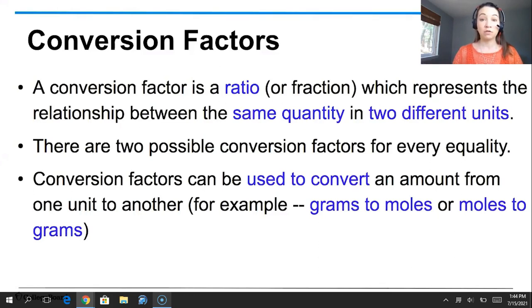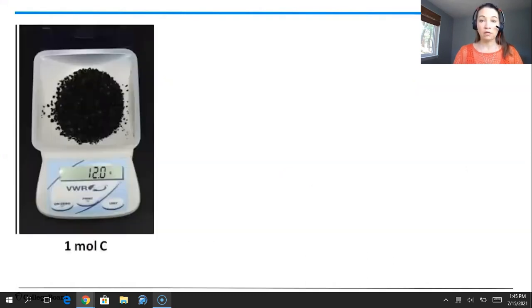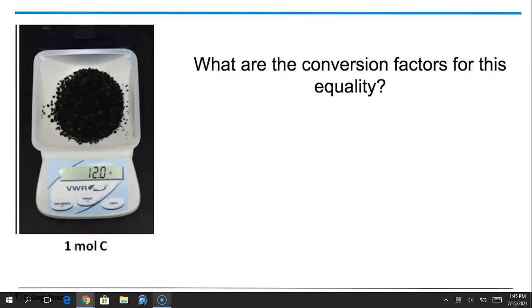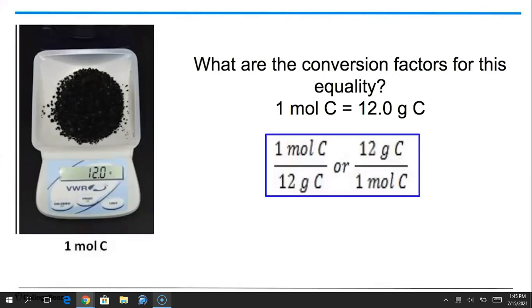So conversion factors can be used to convert an amount from one unit into another unit. And that's generally true. Here, we're talking specifically about converting from moles to grams or grams to moles using conversion factors. So let's take a look at carbon and write some conversion factors between moles and mass for carbon. So what are the conversion factors for the equality we wrote? One mole of carbon equals 12 grams of carbon. Well, one mole of carbon divided by 12 grams of carbon, or the inverse, which has 12 grams of carbon in the numerator and one mole of carbon in the denominator. So those are the two conversion factors between moles and grams specifically for carbon.